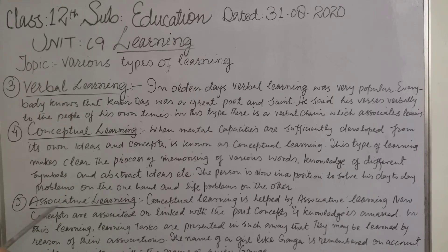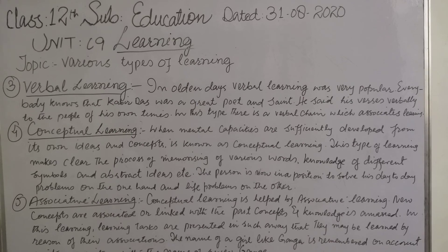Number five: associative learning. Conceptual learning is helped by associative learning. New concepts are associated or linked with past concepts. In this learning, knowledge tasks are presented in such a way that they may be learned by reason of their association. For example, the name of a village like Kishanpur is remembered on account of its association with the name of Lord Krishna.